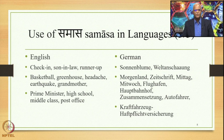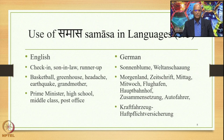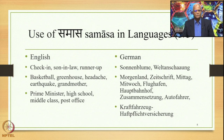German is also very famous for the use of compounds. In fact, the British author Mark Twain said that German compounds are sometimes so long that they seem to have a perspective. Here are some examples from German: Sonnenblum, Weltanschauung, Morgenland, Zeitschrift, Mittag, Mittwoch, Flughafen, Hauptbahnhof, Zusammensetzung, Autofahrer. And there is the example of the very long compound: Kraftfahrzeug Hauptflikt Versicherung.